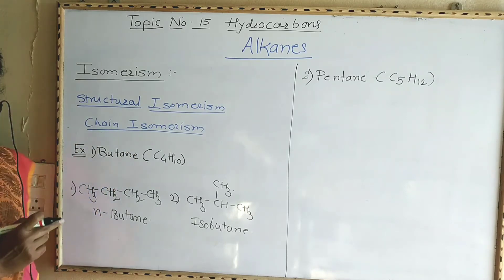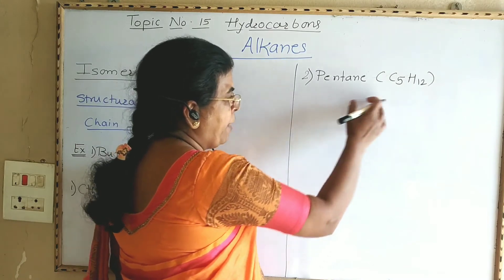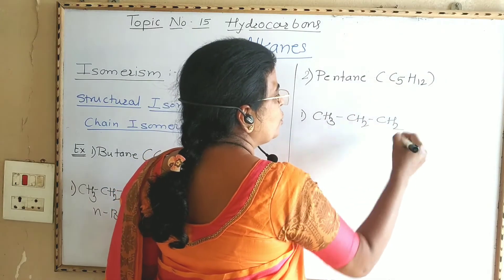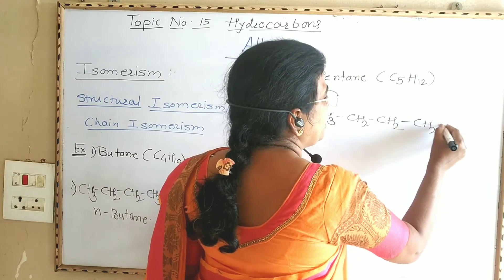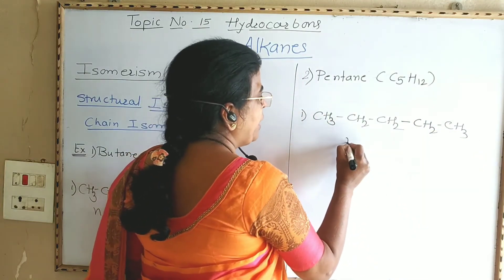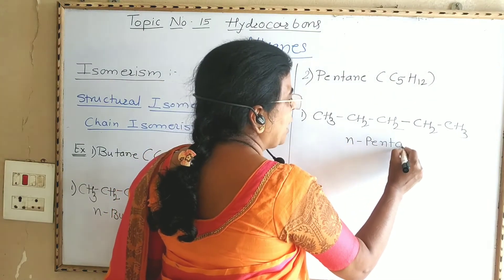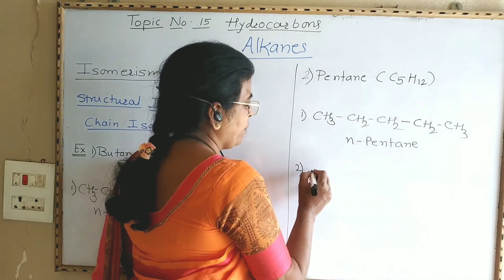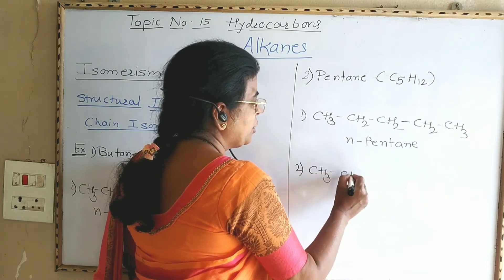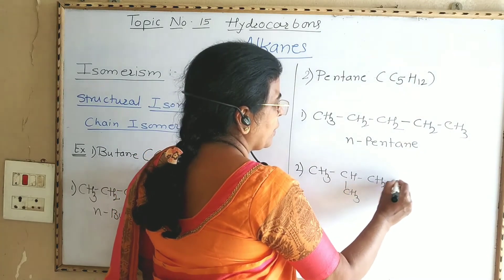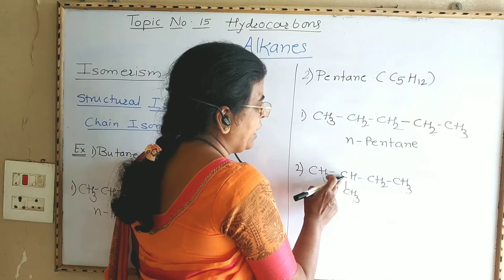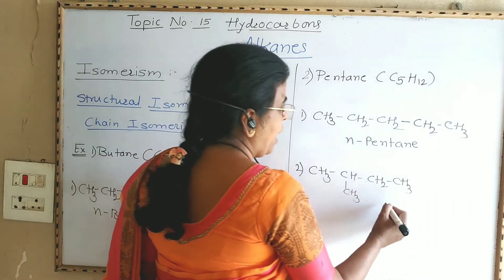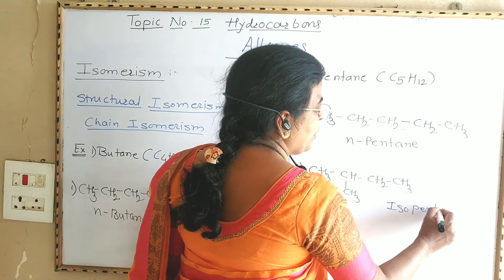In case of pentane, if all five carbon atoms are in a straight chain — CH₃CH₂CH₂CH₂CH₃ — it is n-pentane. In the second isomer, four carbon atoms are in a straight chain and at the second position there is a fifth CH₃ group, therefore it is isopentane — a branched chain isomer of pentane.